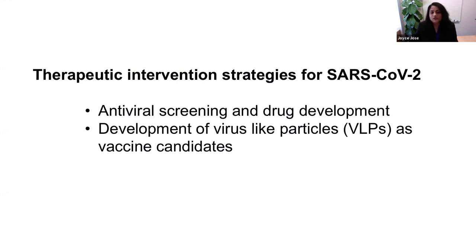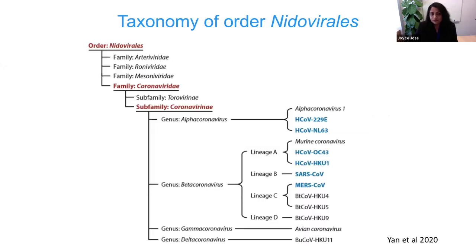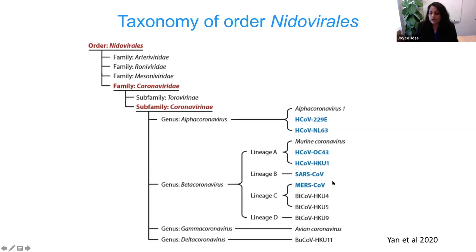I will also mention briefly why we are interested in virus-like particles to study the virus assembly pathway. First, I'll give a brief introduction about the classification of SARS-CoV-2. It's from the order Nidovirales and the family Coronaviridae. Notable members in the beta-coronavirus genus include SARS-CoV-1 that happened in 2002, MERS-CoV whose outbreak happened in 2012, and now SARS-CoV-2, which is also a beta-coronavirus.